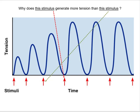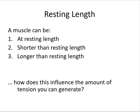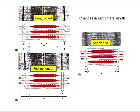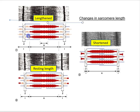Now let's move on to the length-tension relationship. Imagine a muscle at resting length, which means somewhere at the midpoint of sarcomere length. We can see the M line, Z discs, thin filaments, and thick filaments. If we stretch the muscle, the Z discs move in opposite directions, widening the sarcomere. This is a lengthened sarcomere compared to the resting position.